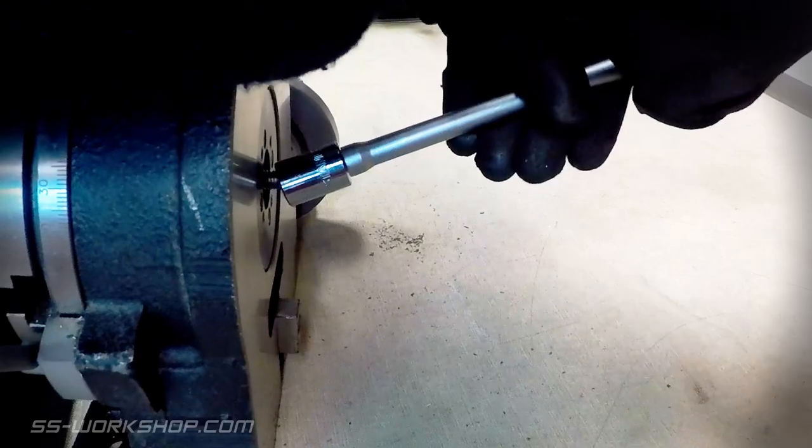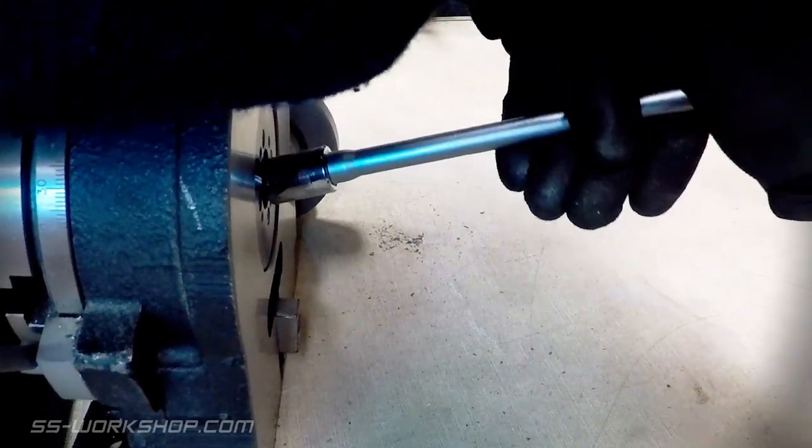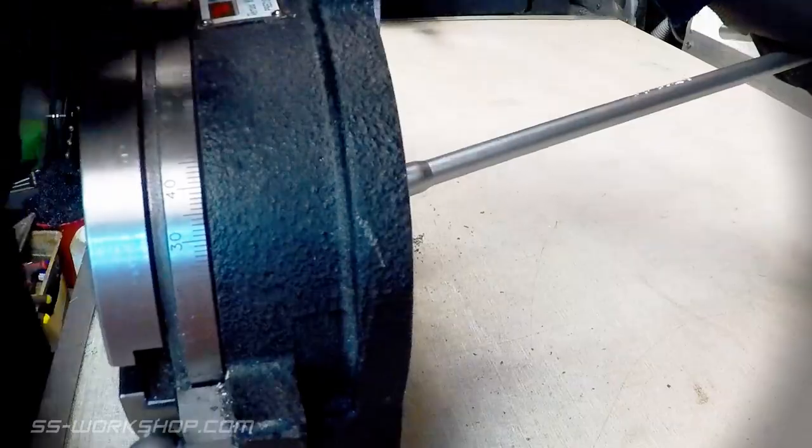Once the hole's reamed it's time to set up the rotary table. I fit an MT2 arbor into the centre of the rotary table. This is sized at 8mm to take the centre hole we've just reamed.